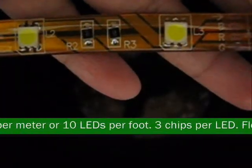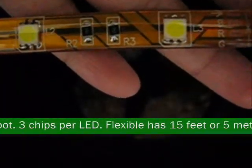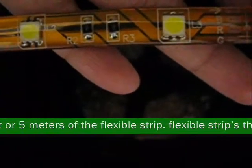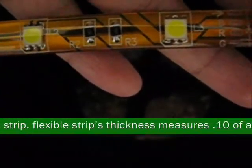30 LEDs per meter or 10 LEDs per foot. 3 chips per LED. Flexible has 15 feet or 5 meters of the flexible strip.